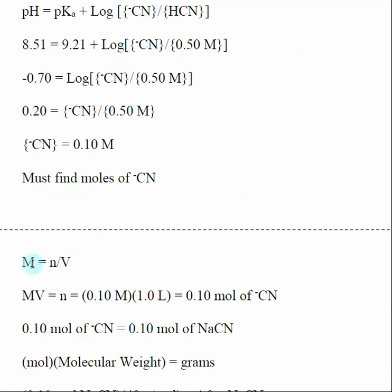So I know what concentration we need to make our CN⁻, it's 0.1 molar. Molarity equals moles divided by volume, or molarity times volume equals moles. So if I want to make a 0.1 molar solution of our conjugate base, and I'm doing this in a one liter solution that was given, I need to add 0.10 moles of CN⁻.